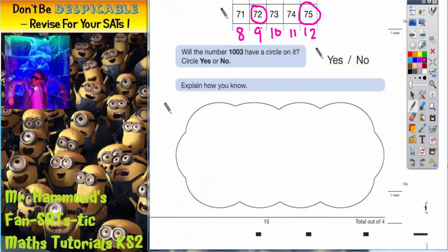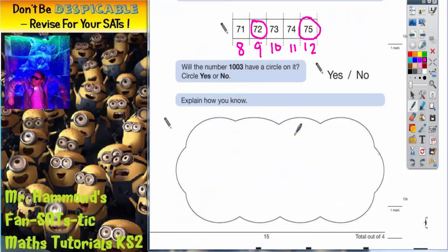If we scroll down to the final part of this question, it says will the number 1003 have a circle on it. Circle yes or no.